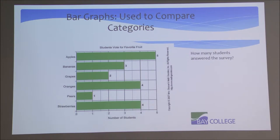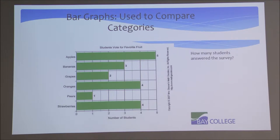The first one we're going to look at is a bar graph. Bar graphs are used to compare different categories relative to quantities. In this example, maybe we had a survey where students voted for their favorite fruits. On the left-hand side from top to bottom is a list of fruits: apples, bananas, grapes, oranges, pears, and strawberries. On the bottom of the graph, we see quantities from 0 through 5, indicating the number of students who chose each fruit.